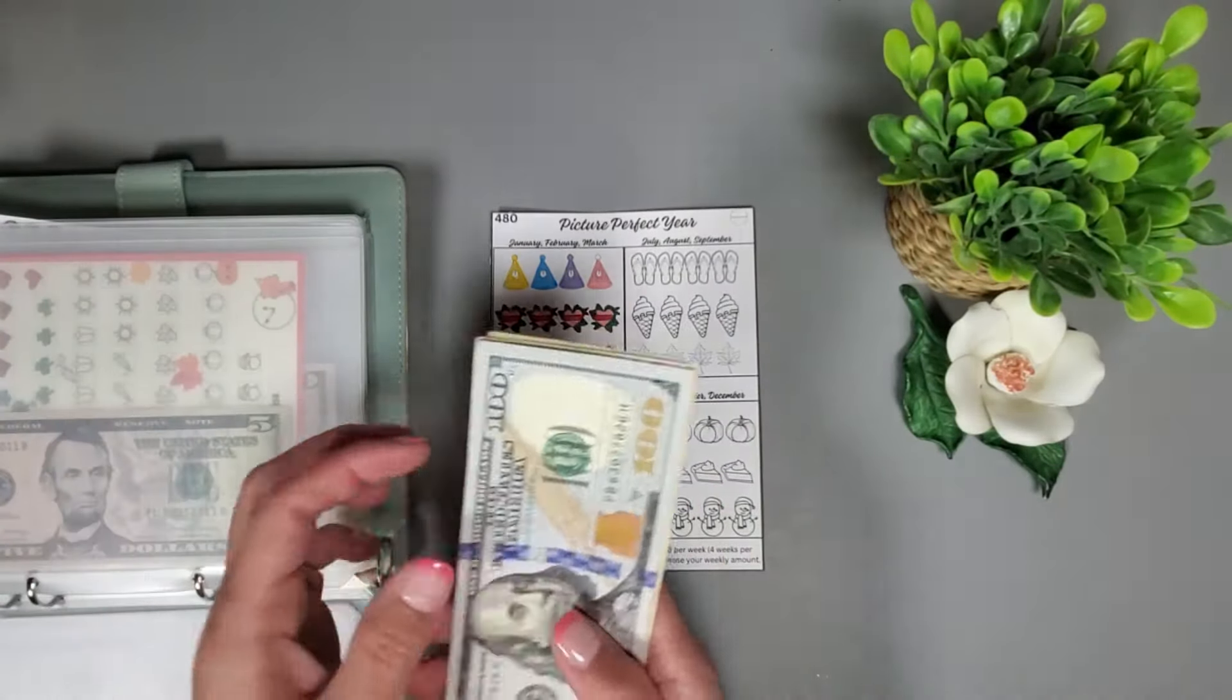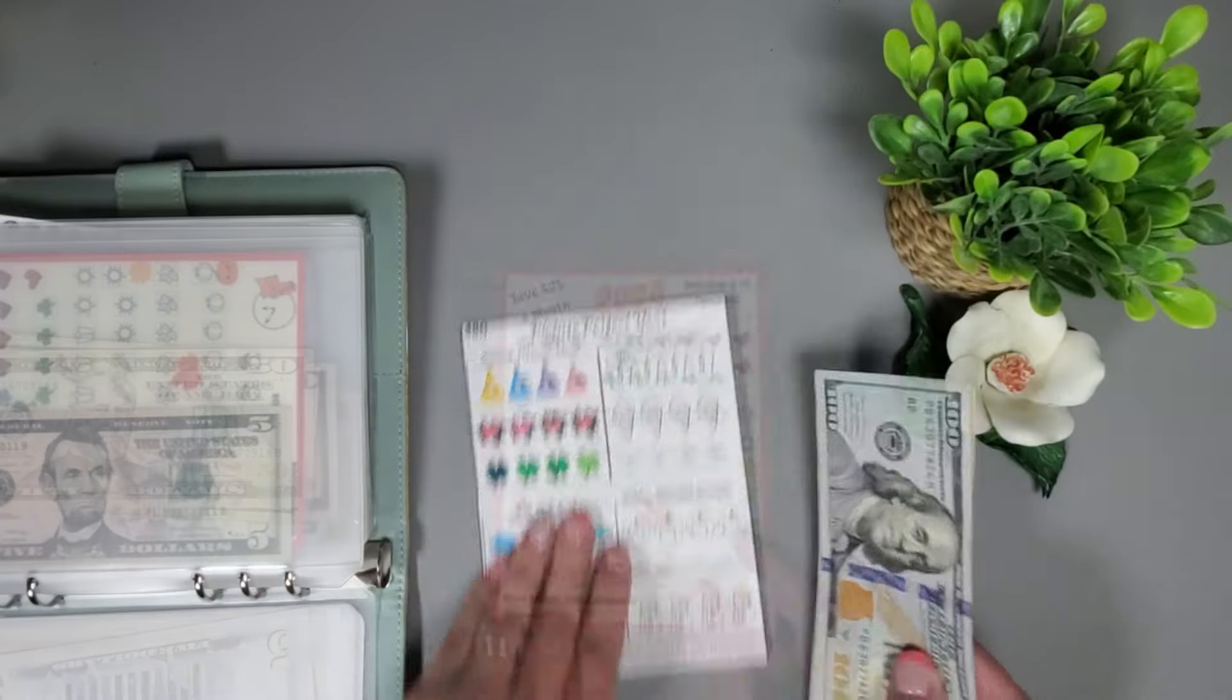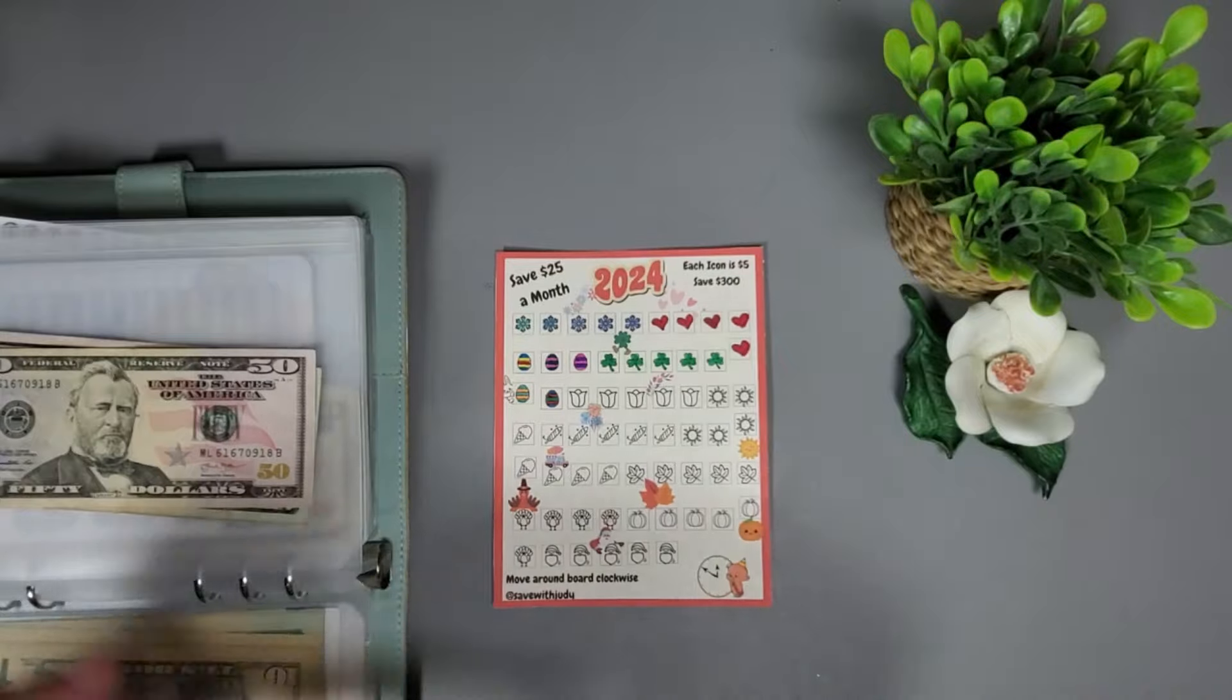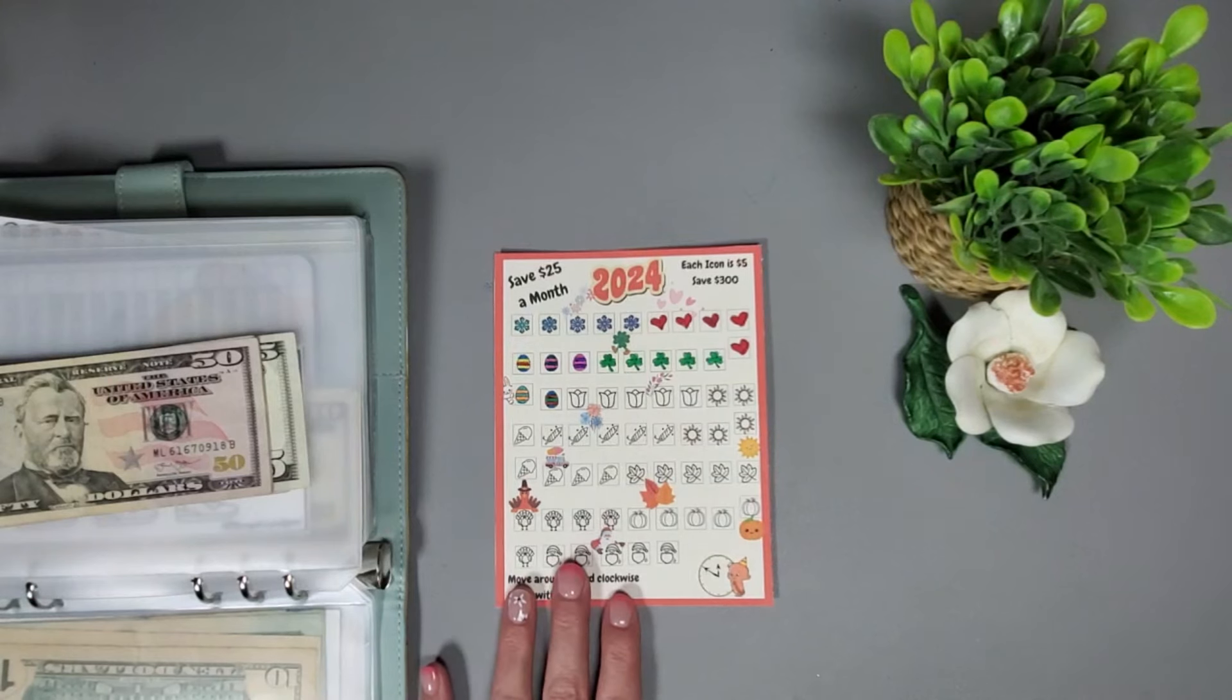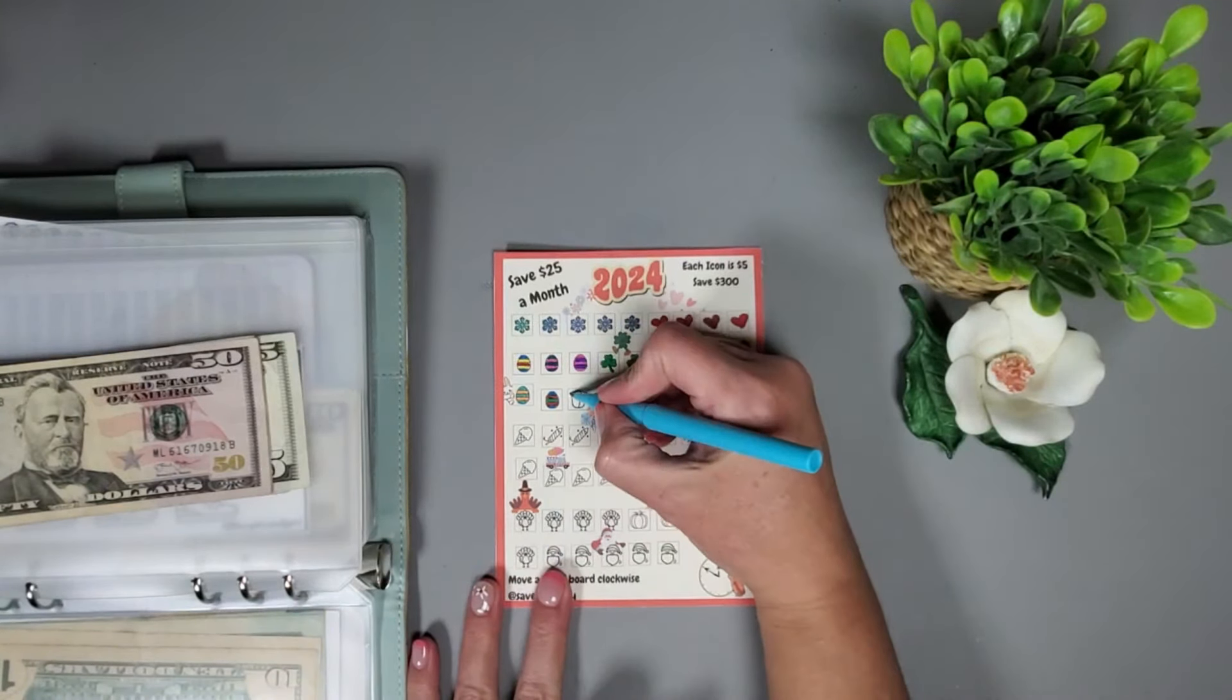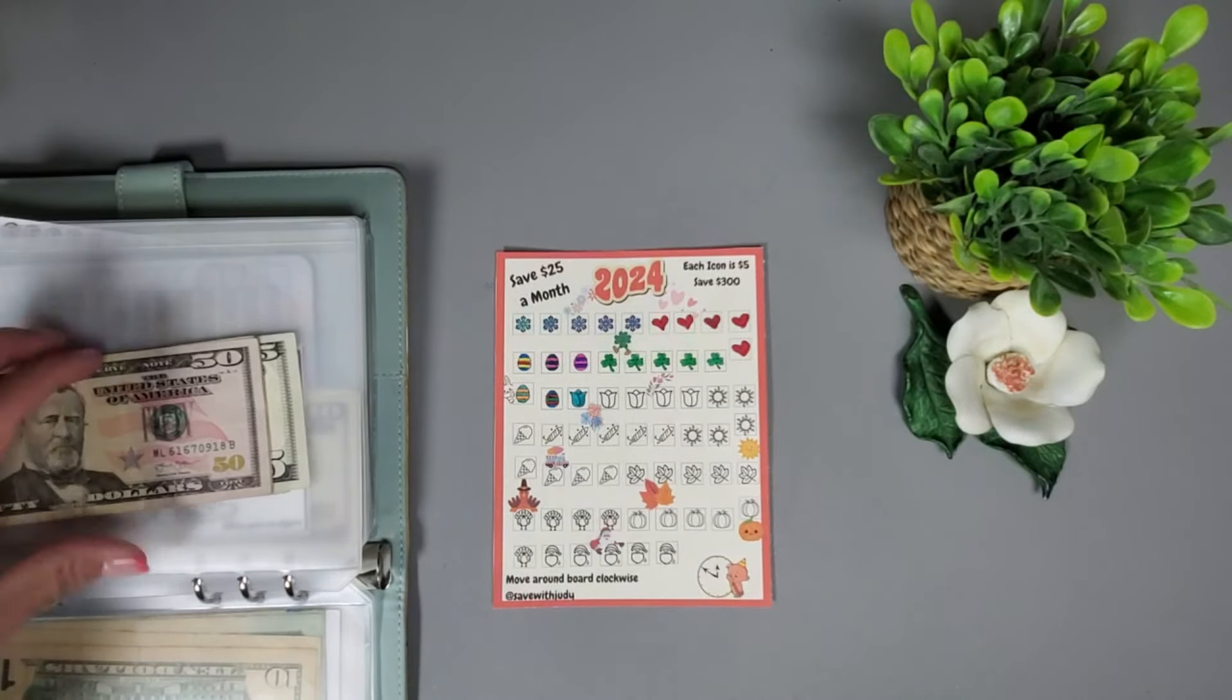So far in this challenge we have 140, 160, 170, 180. This one is from Save with Judy and we put five dollars every week in, so I'm going to go ahead and add my five dollars in and then I'm going to go ahead and get a tulip colored in.